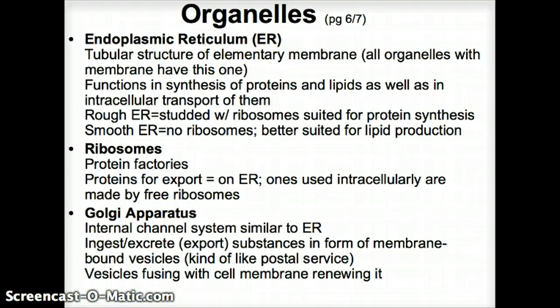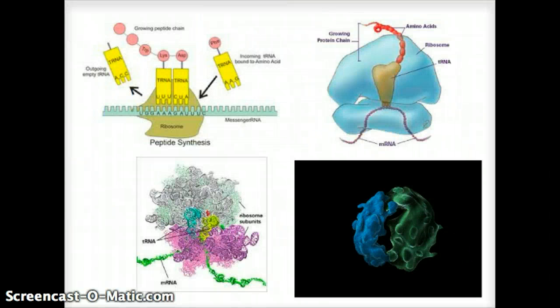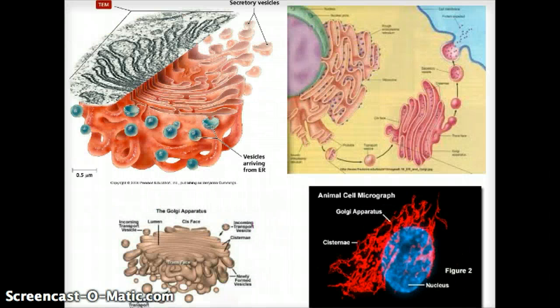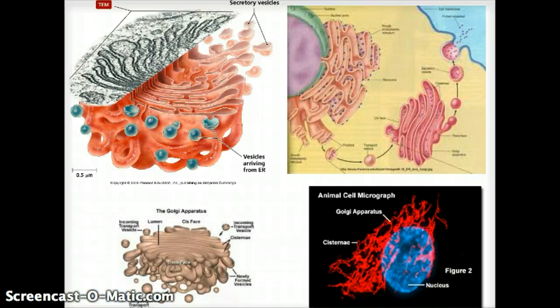Then we get the next organelle, it's the Golgi apparatus. That is an internal channeling system that's very similar to the ER. And what that channeling system does, let's look at the picture for that, is quite interesting. It picks up substances that come, for example, from the ER, the Golgi apparatus does.